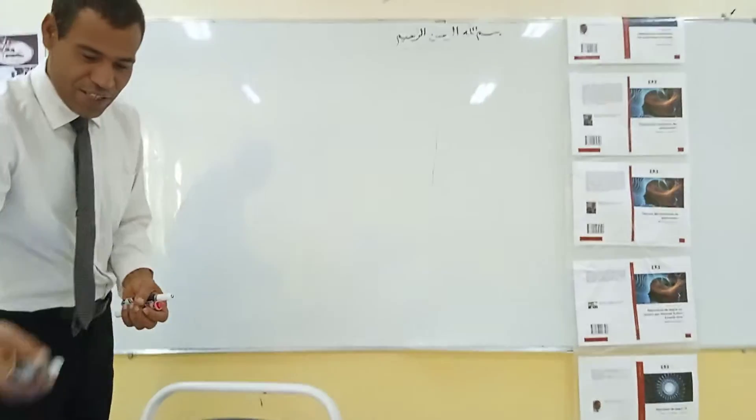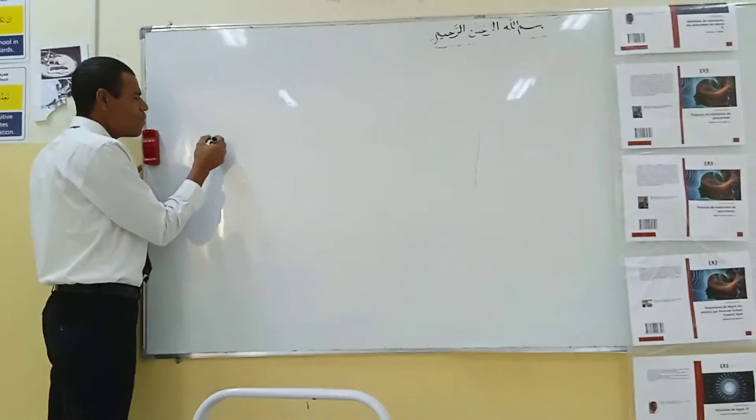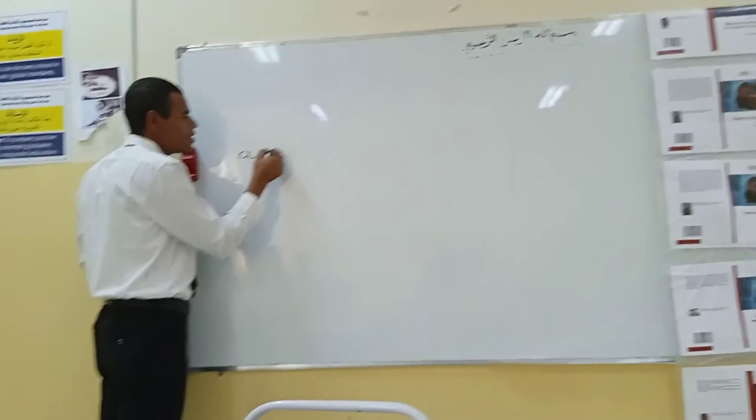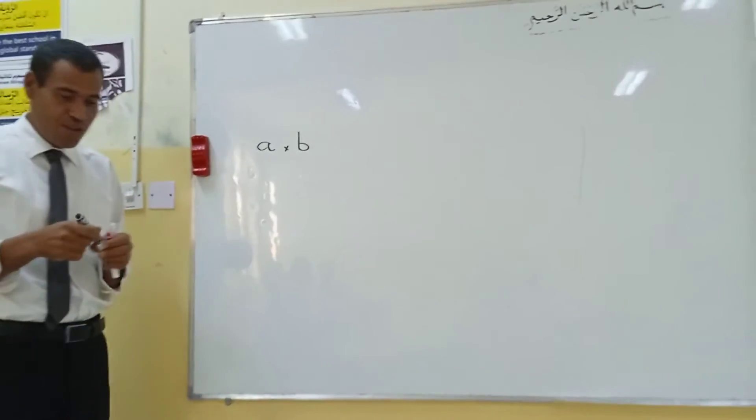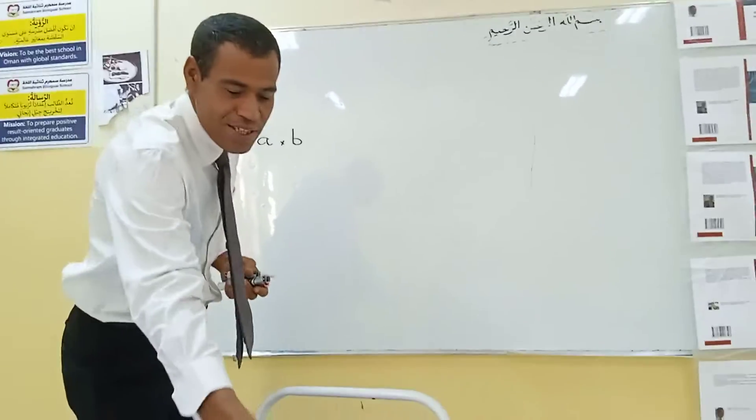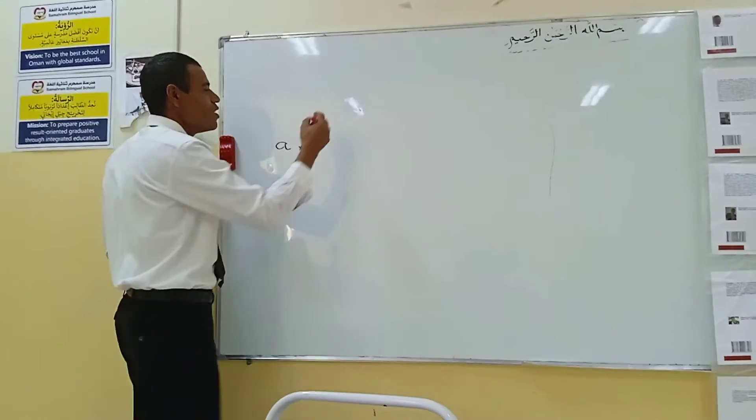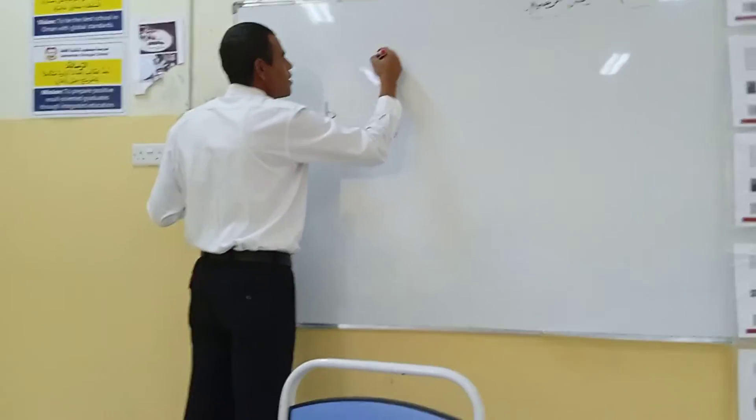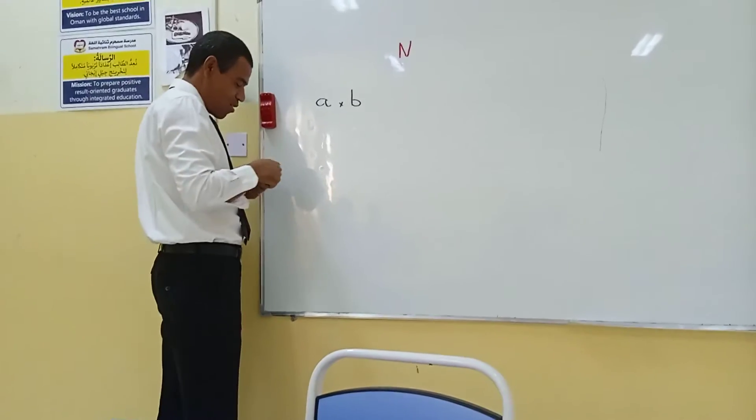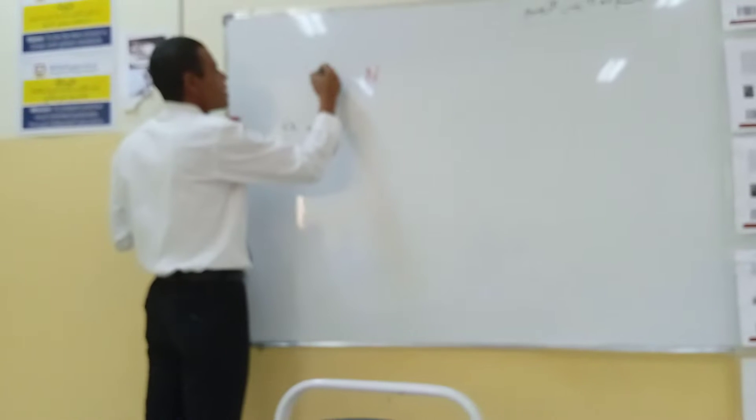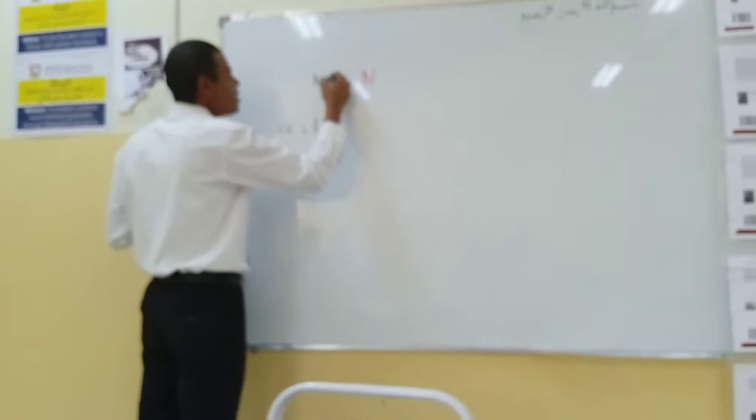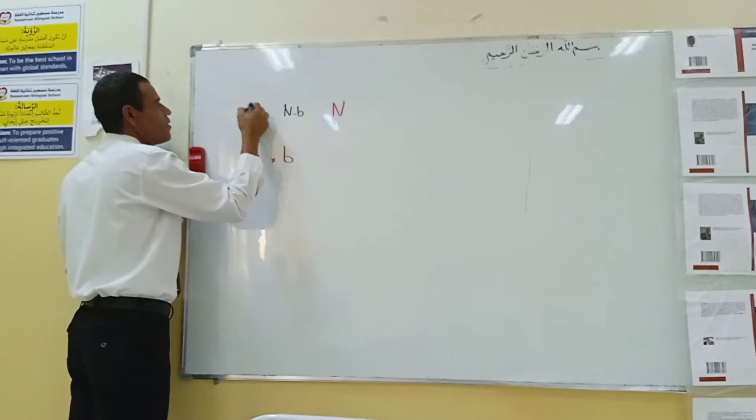First of all, if it is given two numbers A times B, the question is try to find the product of these numbers. First of all, I will suppose that N is the nearest number. Then here I will write the numbers N minus A, and this one is N minus B.